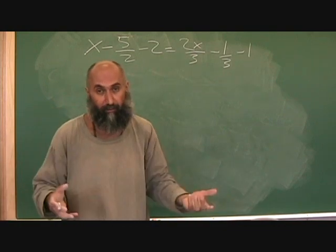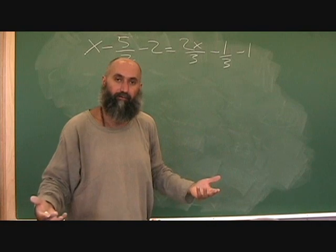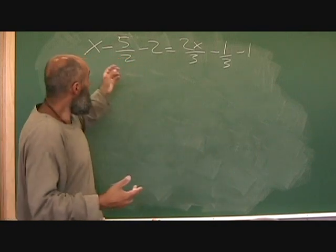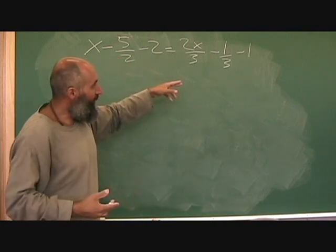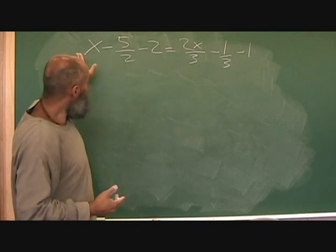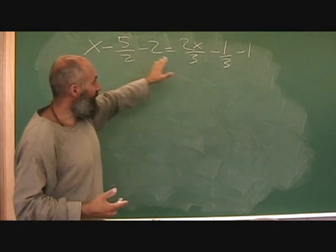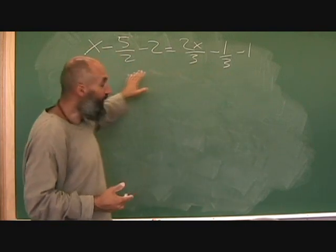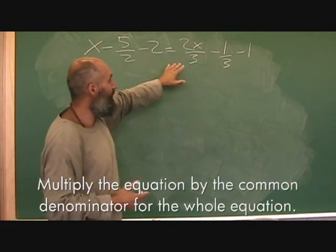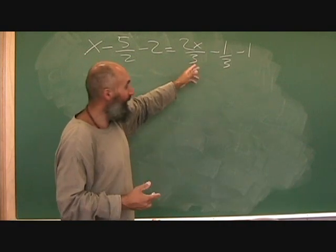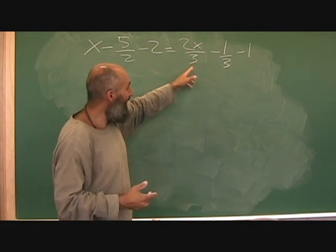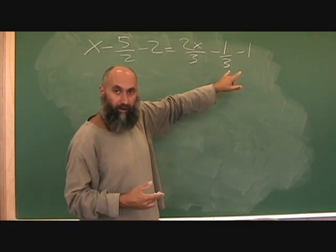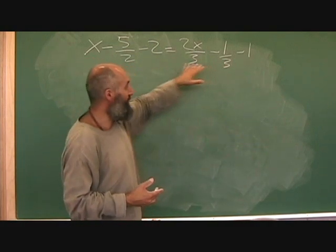I'm going to use cross multiplication - cross multiply, get rid of our fractions and solve. The other way to solve this is to multiply the equation by the common denominator, which means multiply every single term by the common denominator, and what that does is it eliminates all the denominators.